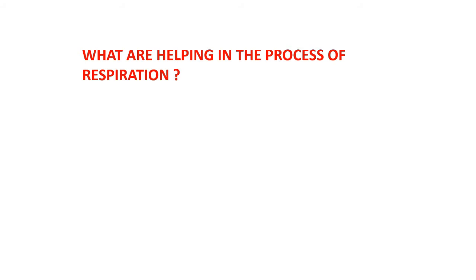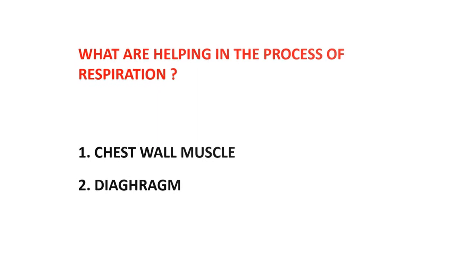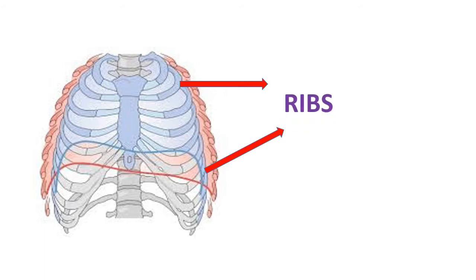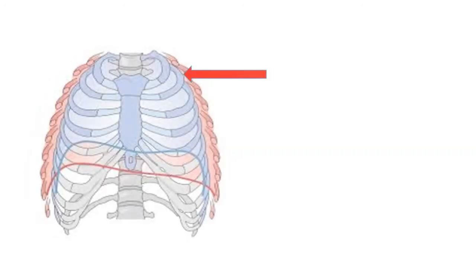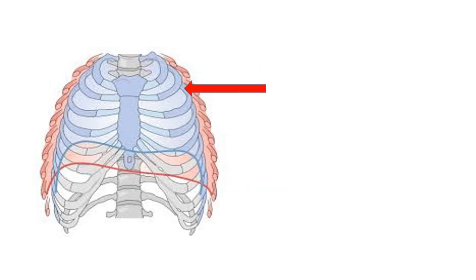So what parts are helping in the process of respiration? The parts helping in the respiration process are the chest wall muscles and the diaphragm. The chest wall muscles are made up of ribs, muscles, and skin. The ribs are attached to the spinal cord and they are arranged at a particular angle. The starting ribs are smaller in size, and as we move downward, they extend in size.